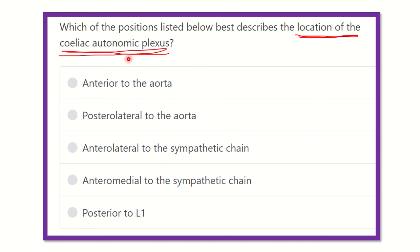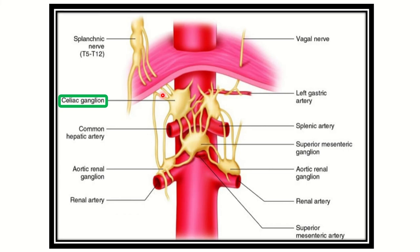Here we can see the red area is the diaphragm, and we can see the splenic nerve and vagus nerve. Just below the diaphragm is the large vessel — the abdominal aorta — and we can see the plexus. This plexus is the celiac plexus or celiac ganglia. From this image, we can determine that the celiac ganglia or celiac plexus lies anteriorly to the abdominal aorta.